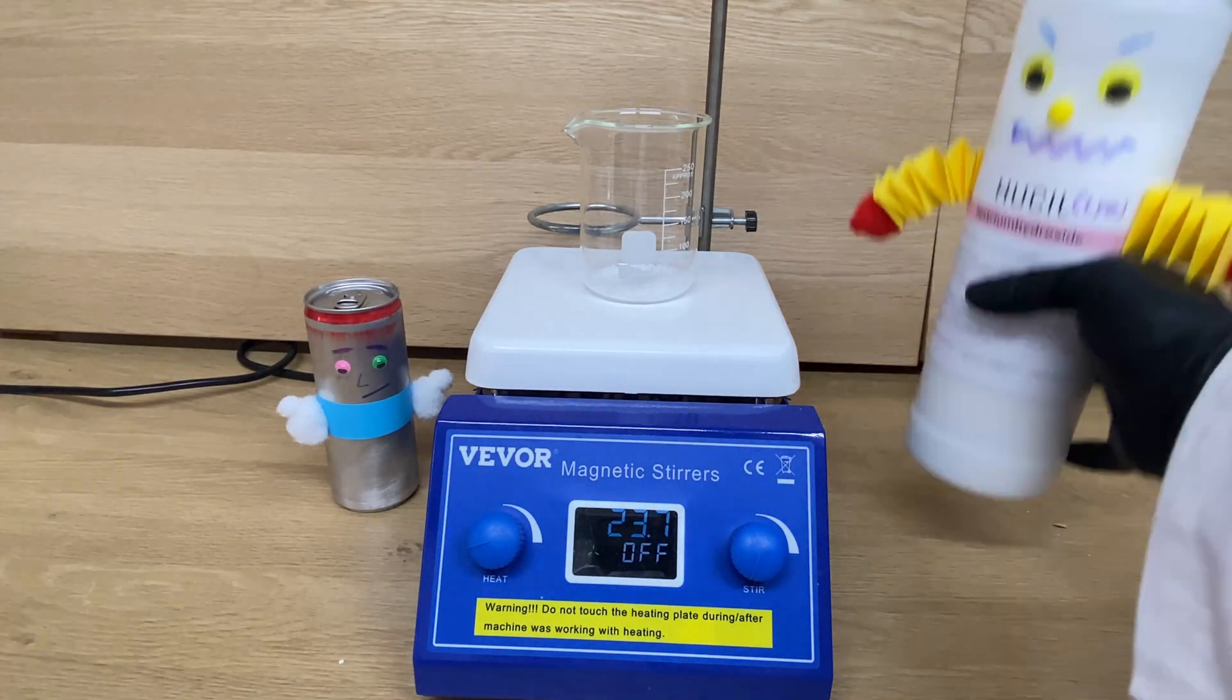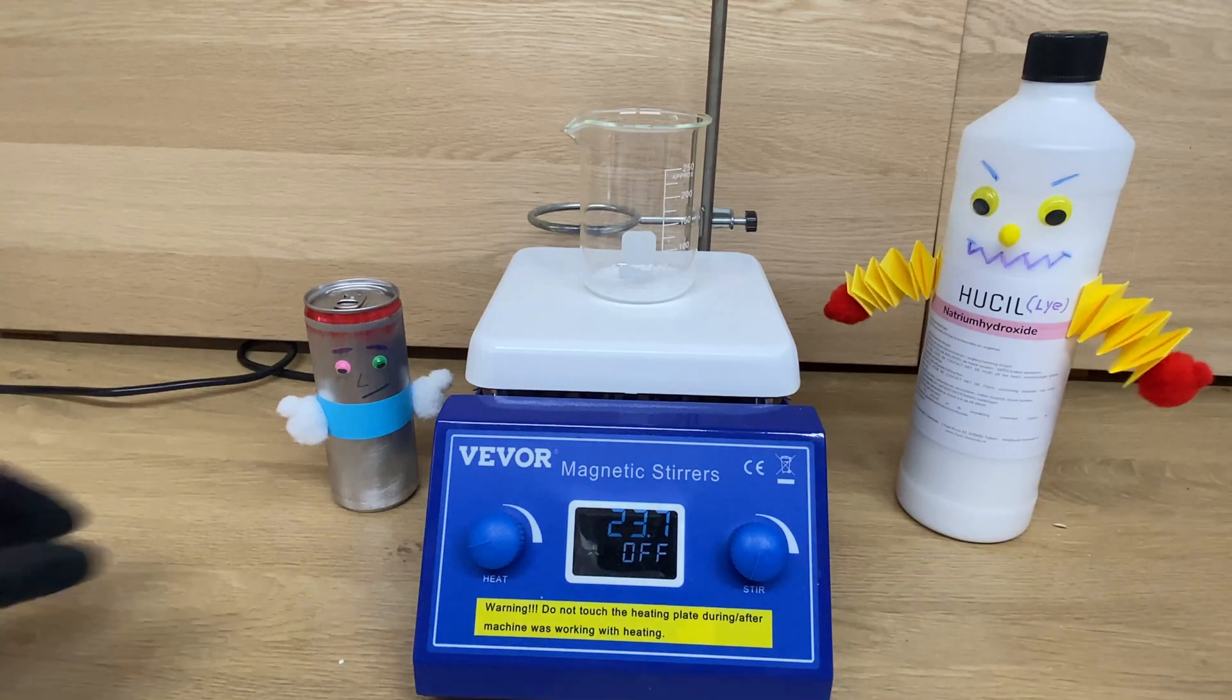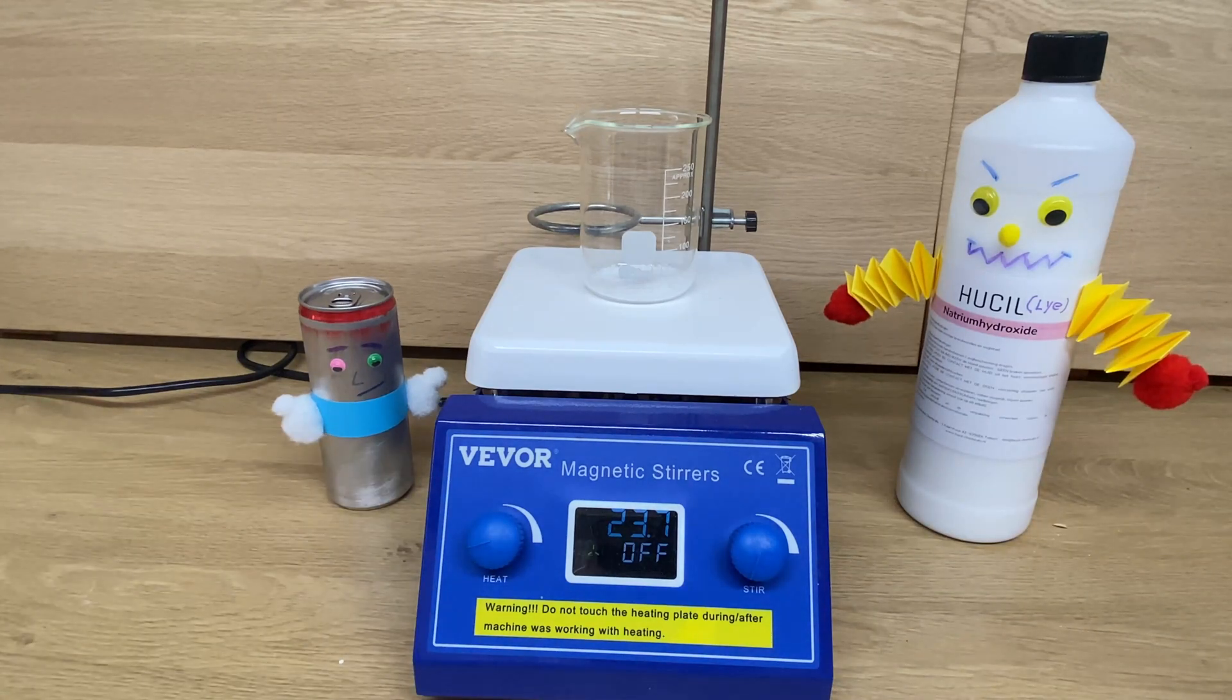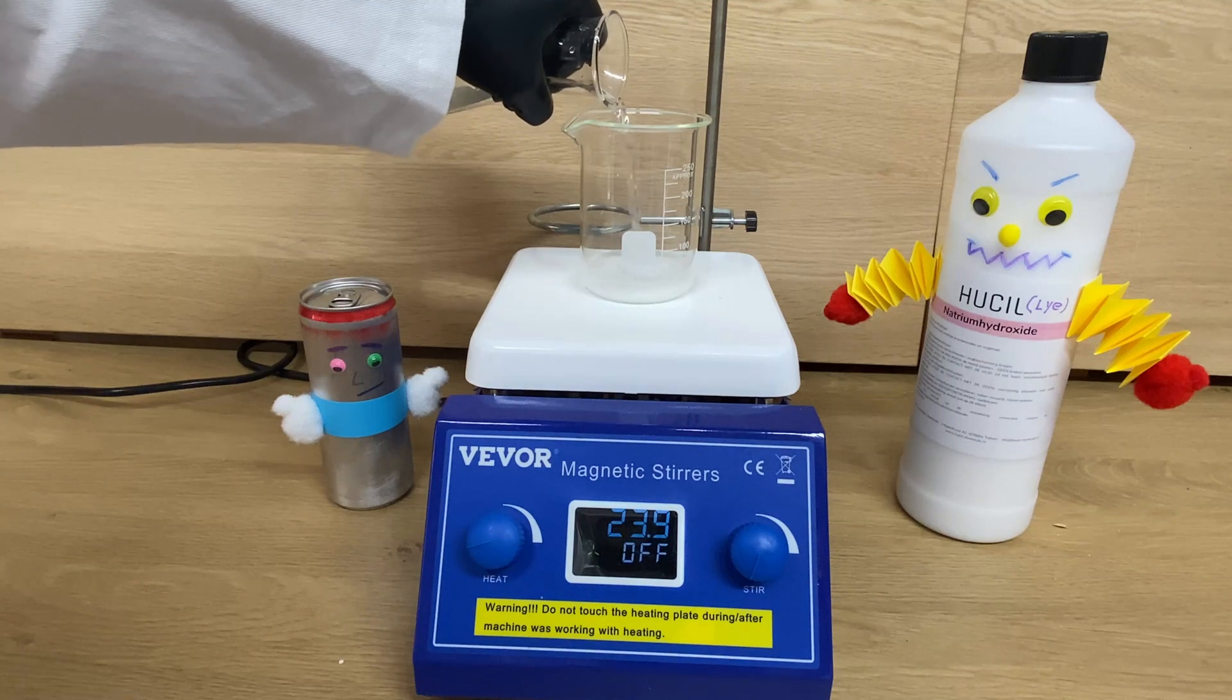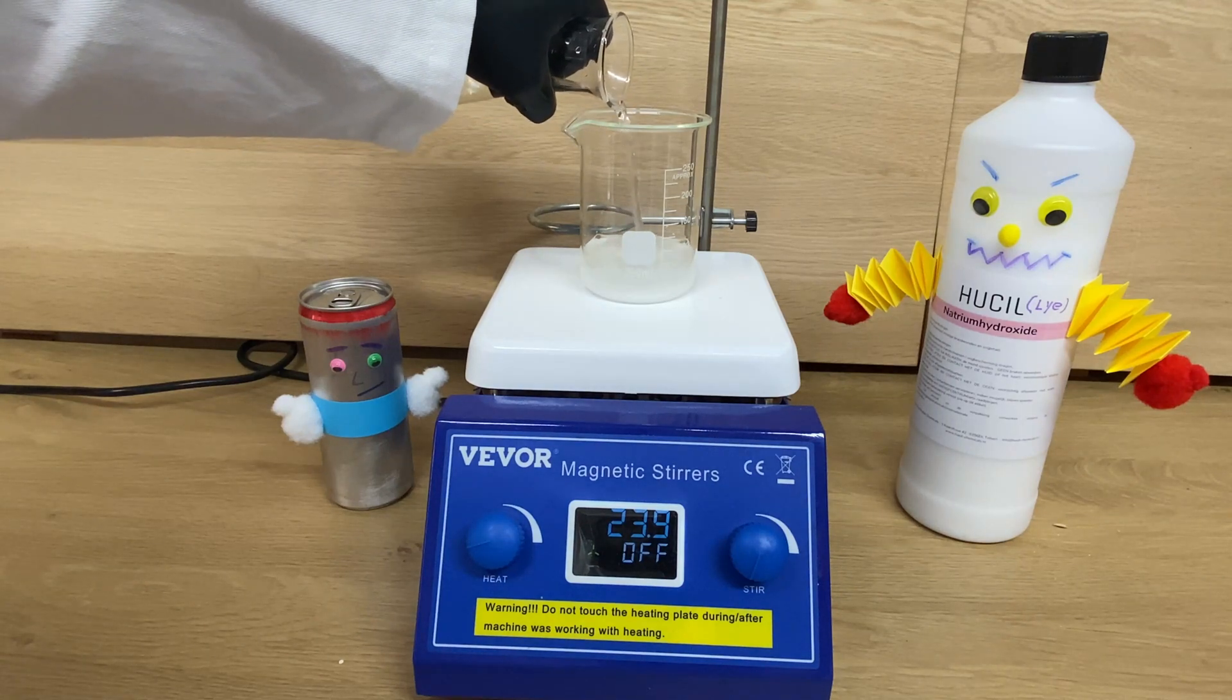Welcome to Cube Chemistry where we will discuss all the elements of the periodic table and also do experiments. If you want to see more make sure to subscribe. Today we will talk about the redox reaction between lye and aluminum.